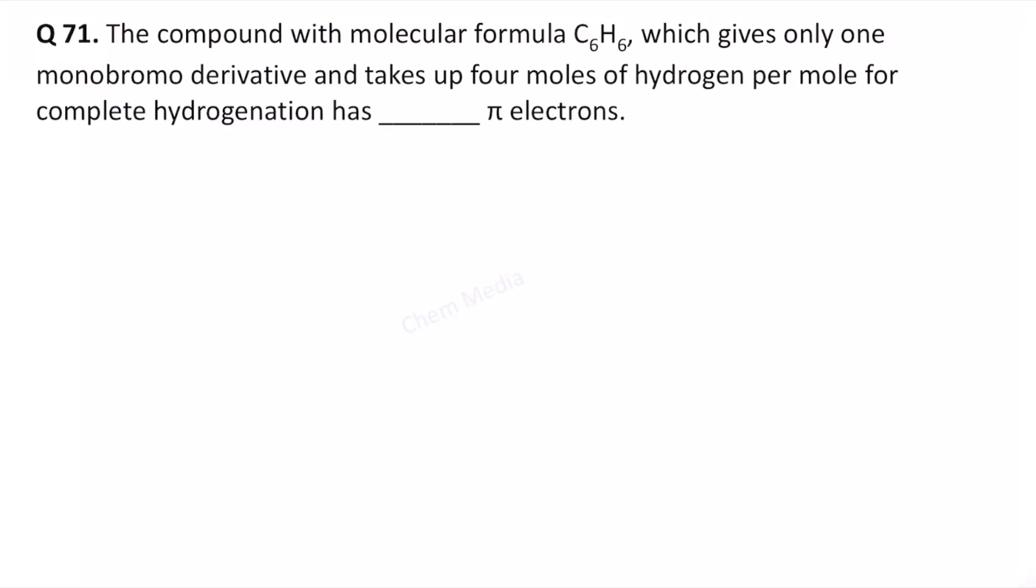Hello everyone, here is a question based on degree of unsaturation and organic reactions. The compound with molecular formula C6H6 which gives only one monobromo derivative and takes up 4 moles of hydrogen per mole for complete hydrogenation has how many pi electrons?